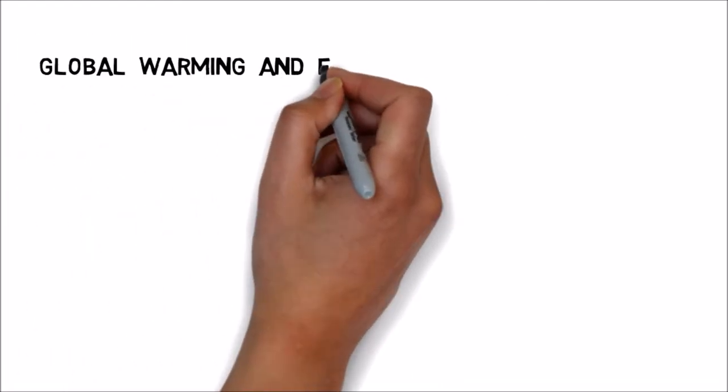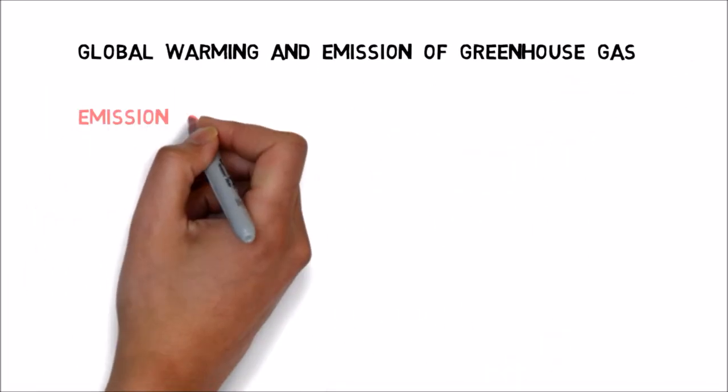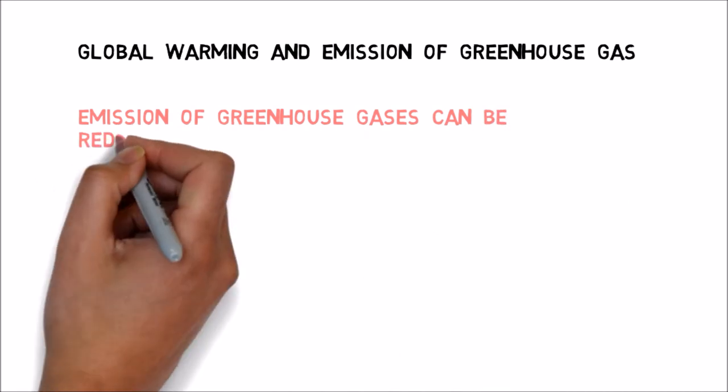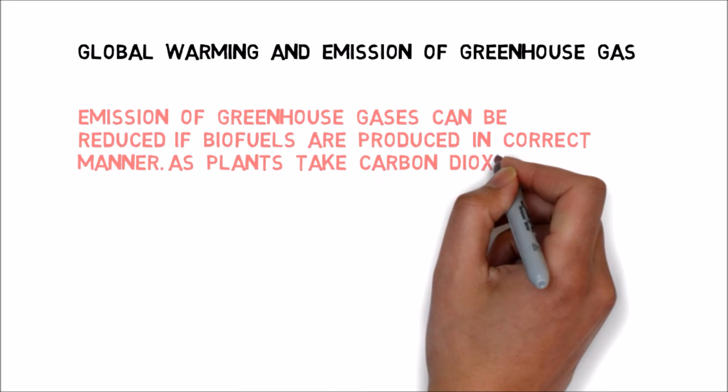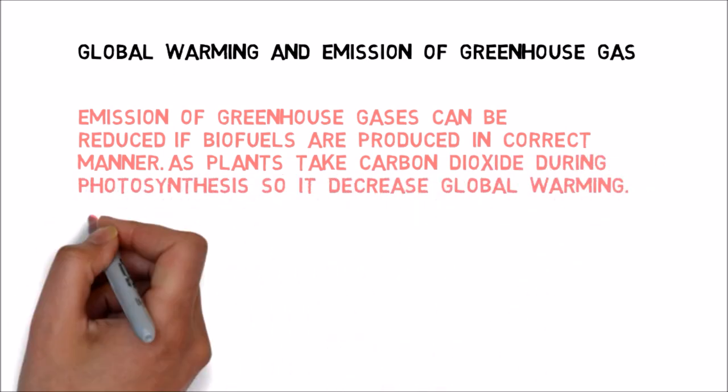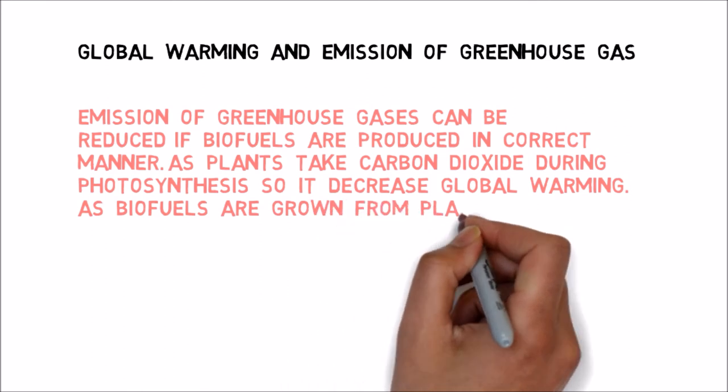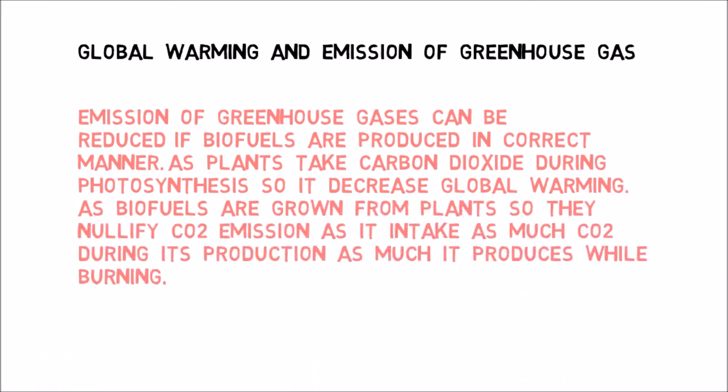Global warming and emission of greenhouse gas. Emission of greenhouse gases can be reduced if biofuels are produced in correct manner. As plants take carbon dioxide during photosynthesis so it decrease global warming. As biofuels are grown from plants so they nullify CO2 emission as it intake as much CO2 during its production as much it produces while burning.